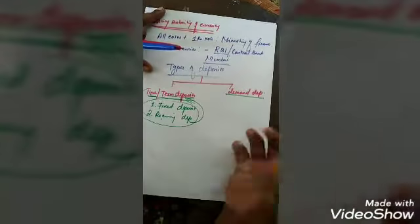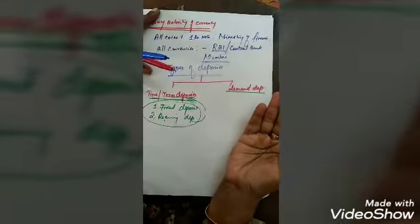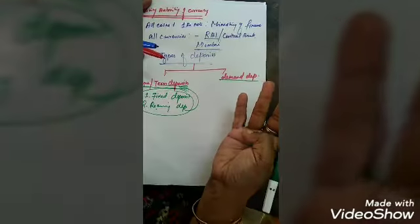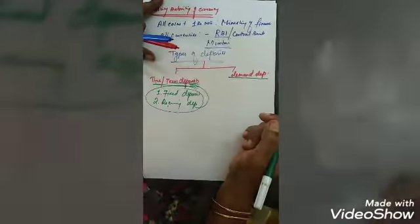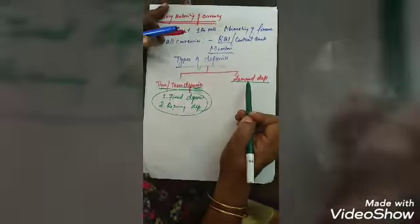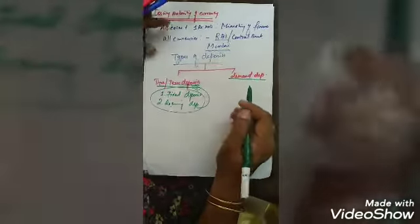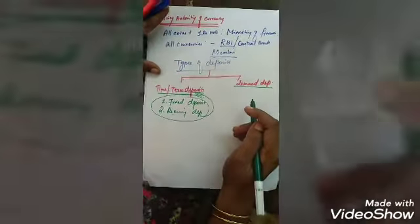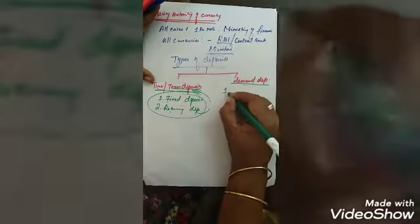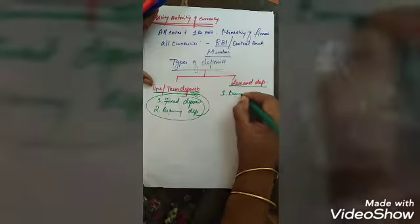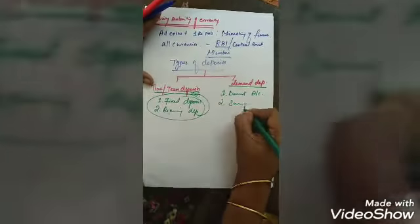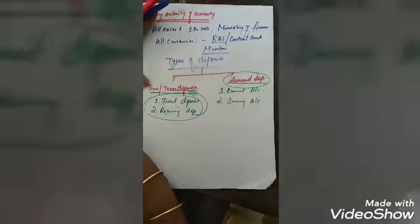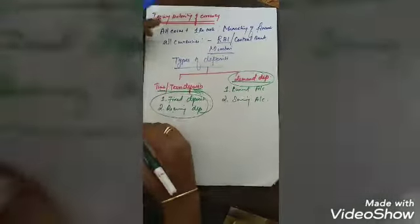Coming to demand deposits — if a demand happens, we can immediately withdraw the money using a cheque, ATM card, or withdrawal slip. That is why it is called a demand deposit. The accounts coming under demand deposits are current account and savings account. A demand or any emergency happens, we withdraw the amount from our account.